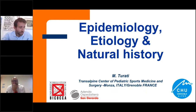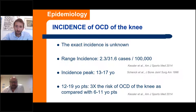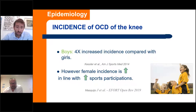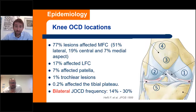Thank you, Frank. Considering epidemiology, the incidence ranges between 2.3 and 31 cases per 100,000 people. The incidence peak is between 13 and 17 years old, with higher risk in older children and adolescents. Boys have a four-fold increased incidence compared with girls; however, female incidence is increasing in line with increased sports participation. Interracial differences in OCD are important, being more frequent in Black patients. Considering anatomical location in the knee, 77% of lesions affect the medial femoral condyle, in particular the lateral aspect. 17% affect the lateral femoral condyle, 7% affect the patella. Bilateral OCD location frequency is between 14 and 30% of patients.